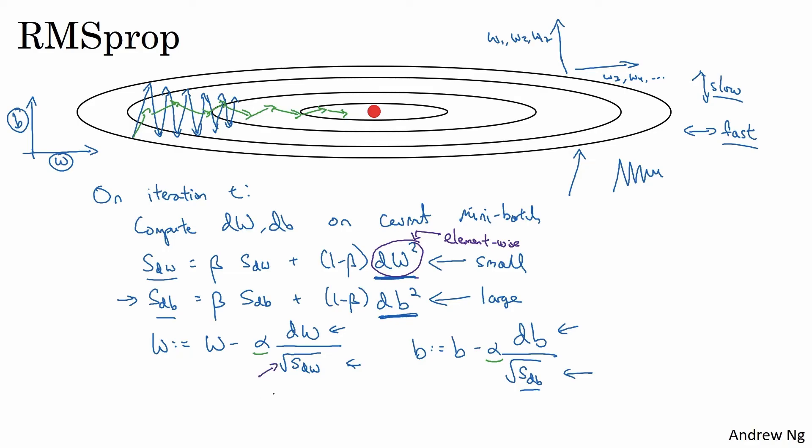So finally, just a couple of last details on this algorithm before we move on. In the next video, we're actually going to combine RMSprop together with momentum. So rather than using the hyperparameter beta, which we had used for momentum, I'm going to call this hyperparameter beta 2, just to not clash under the same hyperparameter for both momentum and for RMSprop.